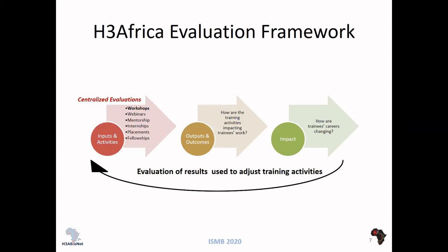For example, we evaluate how the career of a person is evolving over time — whether the person is able to get new funding for research projects, produce publications, and maybe go for further studies. These are the criteria we use to evaluate career progression, and then based on these results, we adjust the training activities of the consortium.